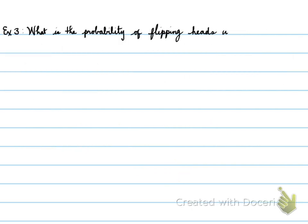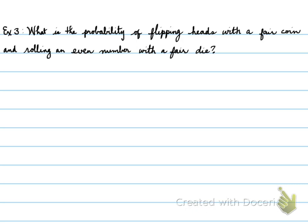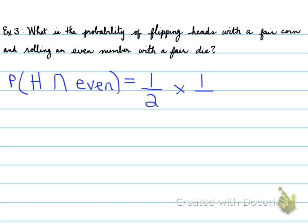Example three: what is the probability of flipping heads with a fair coin and rolling an even number with a fair die? These two events don't affect each other. The probability of heads is one over two, times the probability of getting an even number, which is three-sixths. One-half times three-sixths gives one-quarter. So there is a one-in-four chance of getting heads and rolling an even number.